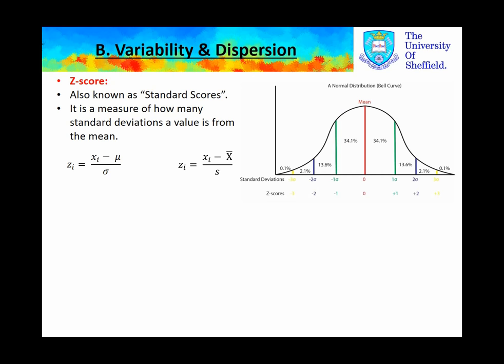Finally, we have the Z-score. The Z-score is a measure of how many standard deviations a value is from the mean. We illustrate with this normal distribution bell curve on the right-hand side. The Z-score gives us a value between minus 3 and plus 3, approximately, which illustrates how many standard deviations and what proportion of data that's in.